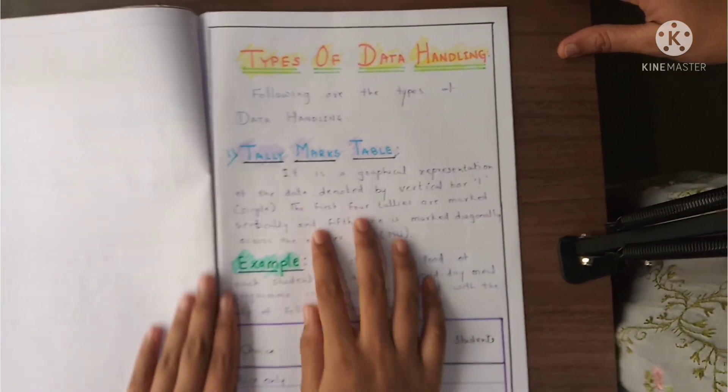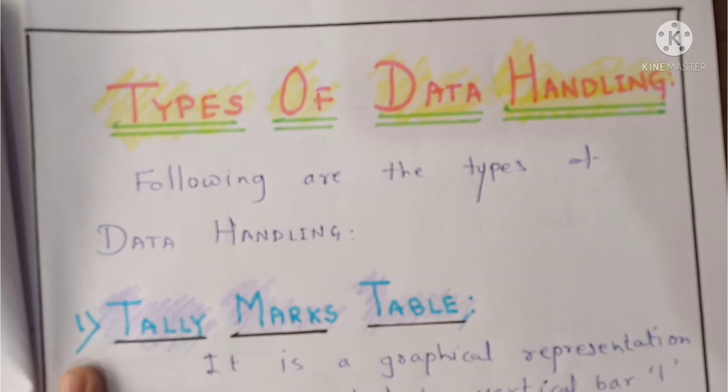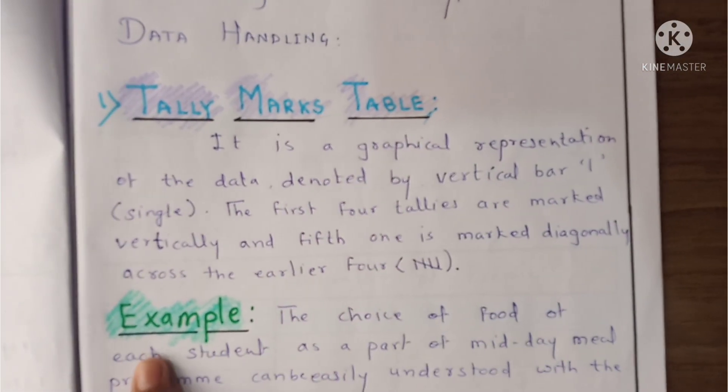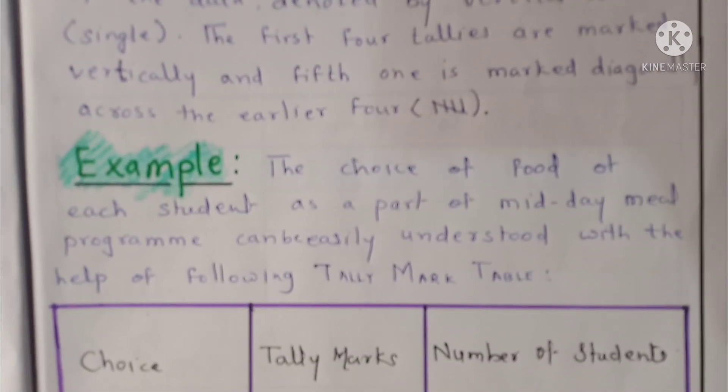And here are the types of data handling. Number 1st is the tally marks table. Here is the example and here is the table of tally marks.